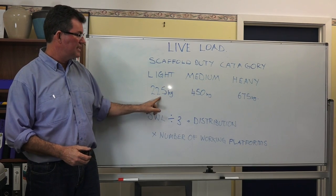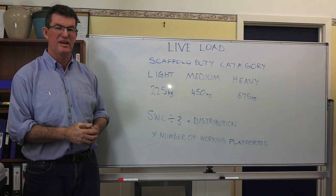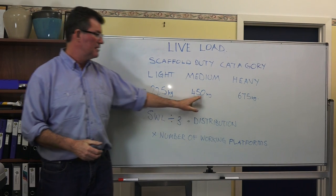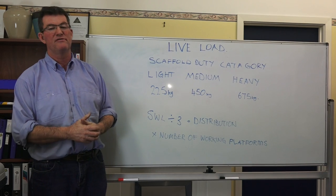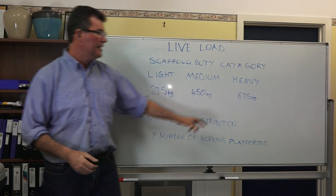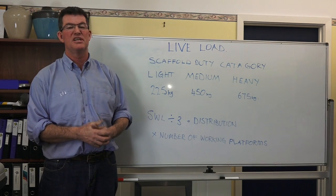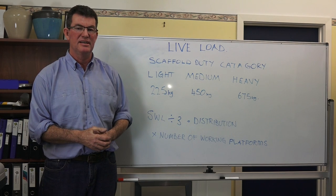A light duty scaffold can take up to 225 kilos of persons and materials on each working platform in each lift. A medium duty scaffold can take up to 450 kilos of persons and materials on each working platform in each lift. And a heavy duty scaffold can take up to 675 kilos of persons and materials on each working platform in each lift.